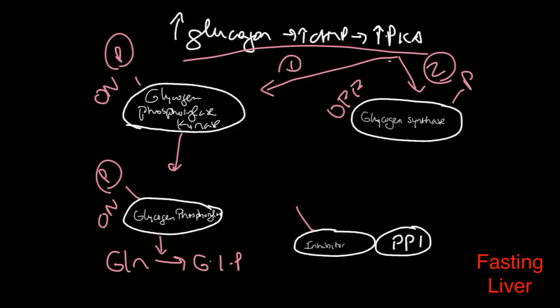It will phosphorylate glycogen synthase, turning it off. The third thing PKA will do is phosphorylate the inhibitor that's bound to protein phosphatase 1. When this is phosphorylated, the inhibitor inactivates protein phosphatase 1, turning it off. So this is your fasted response.